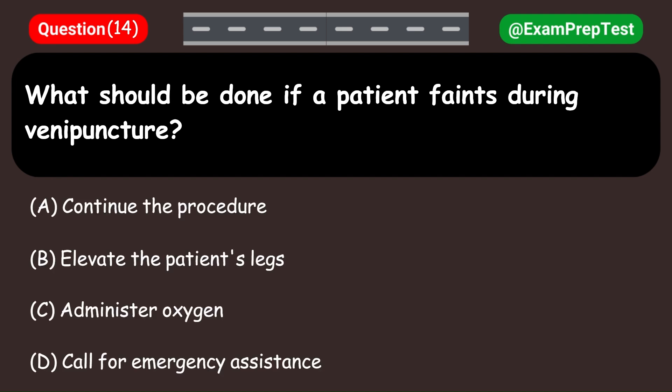What should be done if a patient faints during venipuncture? A. Continue the procedure. B. Elevate the patient's legs. C. Administer oxygen. D. Call for emergency assistance. Answer: B. Elevate the patient's legs.